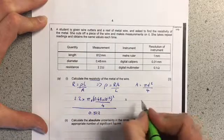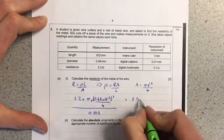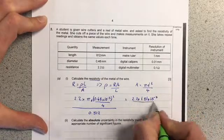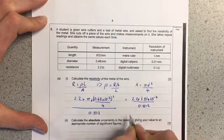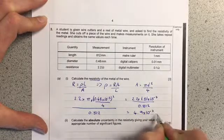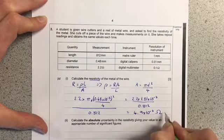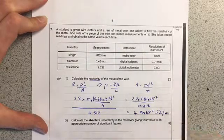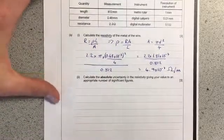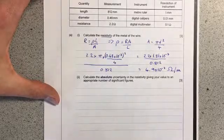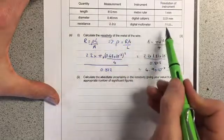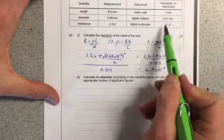All of that is over 0.812, which also needs to be in meters. After calculation, I get 2.2 times 1.81 times 10⁻⁷ over 0.812, which equals 4.9 times 10⁻⁷ ohms per meter. The next part asks us to calculate the absolute uncertainty. This involves more number work. Since we have no repeat values, the uncertainty in each measurement equals the resolution of the instrument.